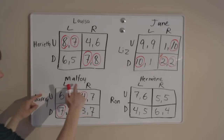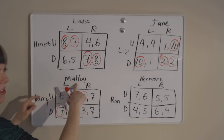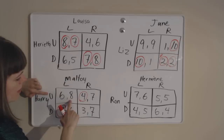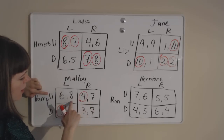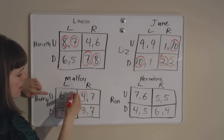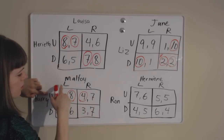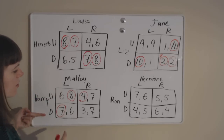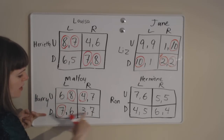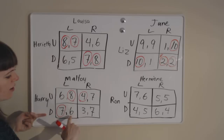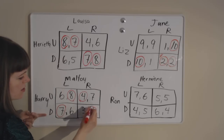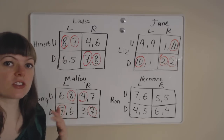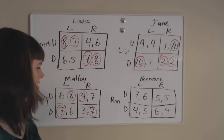We switch perspectives and think about this from Malfoy's perspective. If Harry goes up, Malfoy would have wished he chose the 8 — he would have wished he'd gone left. If Harry goes down, Malfoy's best response is to choose right. So in this game, there is no Nash equilibrium.